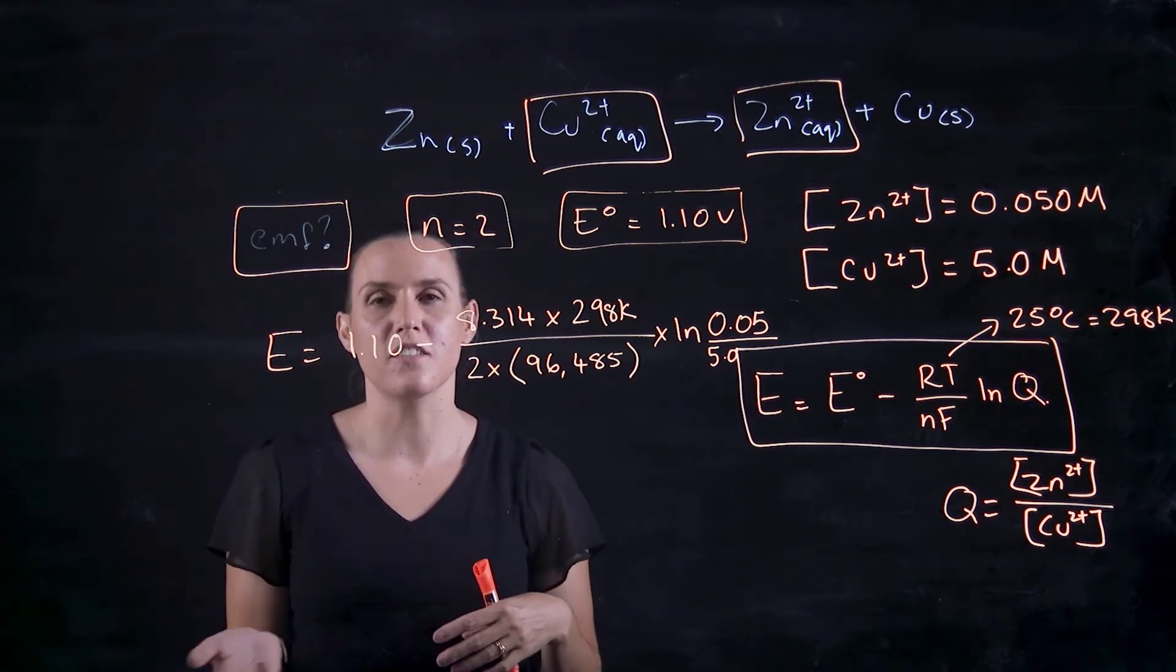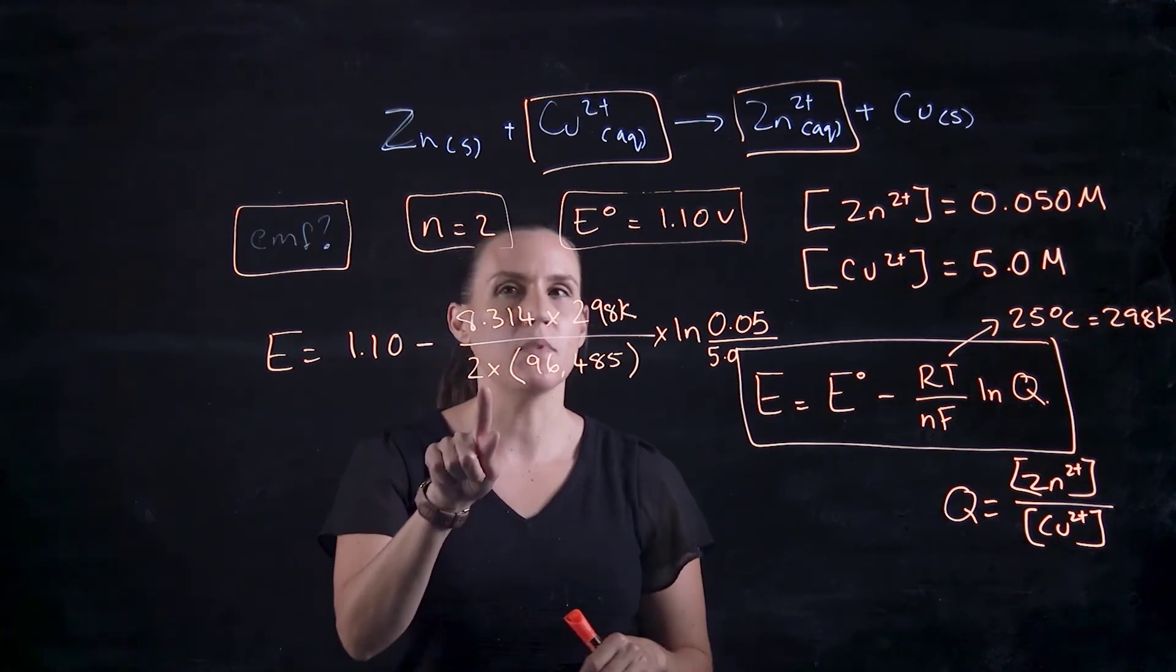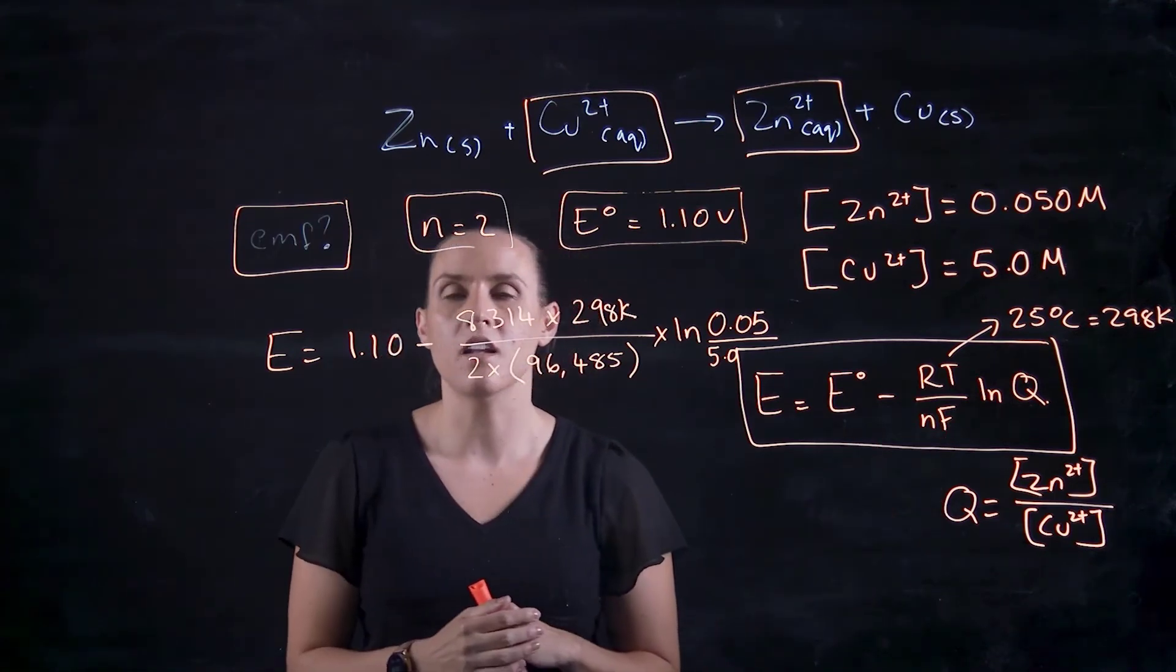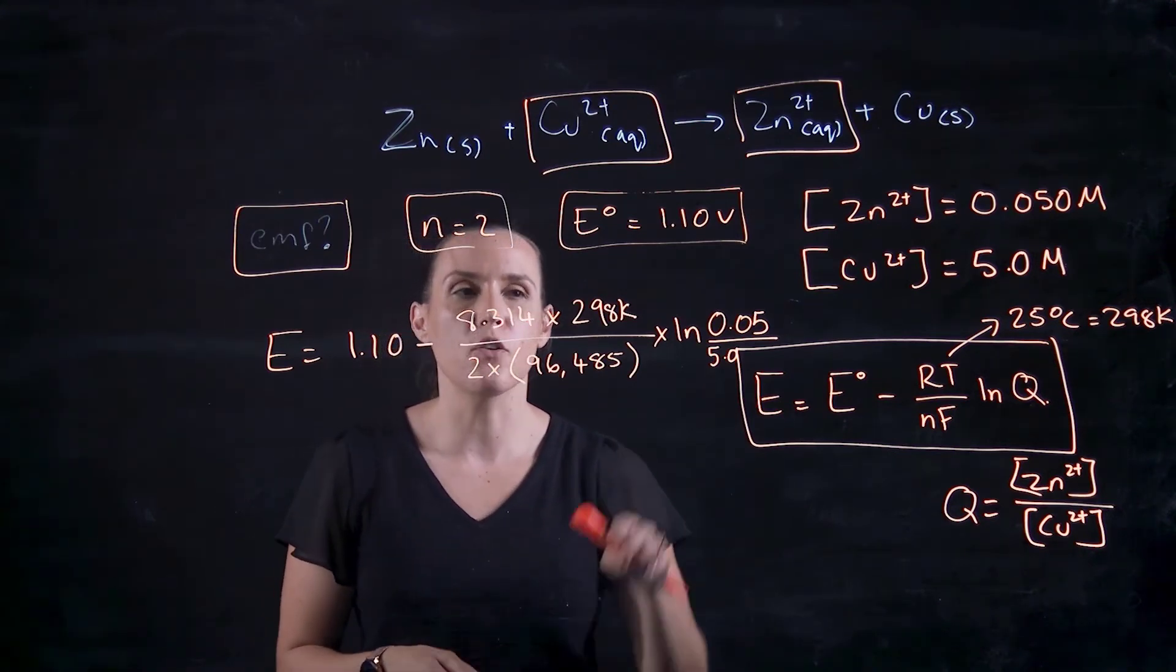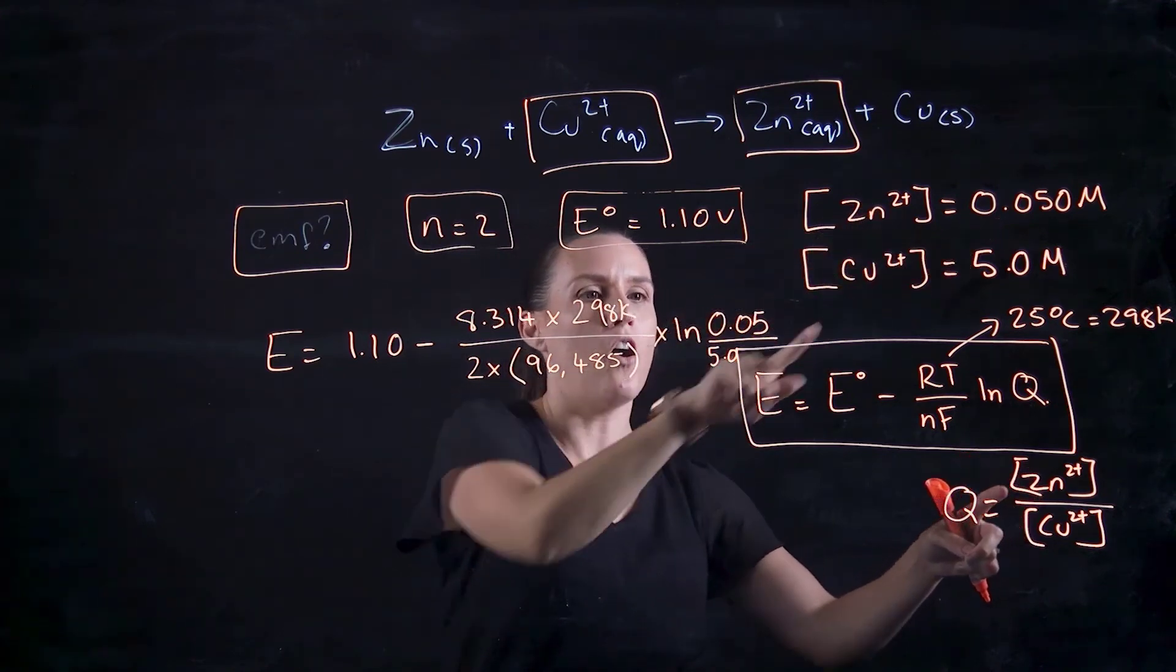So it's 25 degrees plus the 273.14, so we can round this to 298. Number of electrons is 2, and then Faraday's constant is 96,485. And then we multiply that by the zinc over the copper.